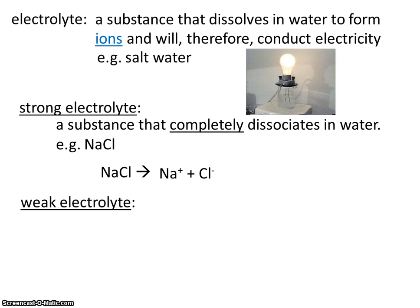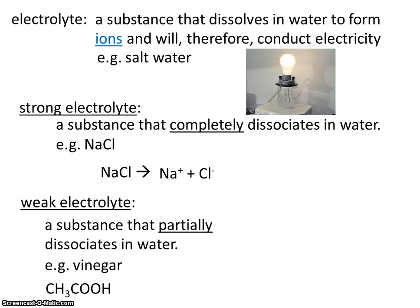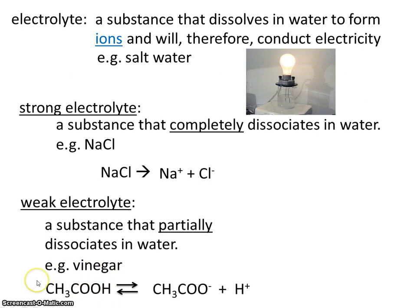Let's contrast that with a weak electrolyte. A weak electrolyte is a substance that partially dissociates in water. So a strong electrolyte completely breaks apart, while a weak electrolyte partially breaks apart. A classic example is vinegar, or acetic acid, written as CH₃COOH. When vinegar is placed in water, some of it breaks apart to form ions, while some of it still stays as the original molecule. So what we have in the solution is some reactant and some product — the reactant does not conduct electricity; it's only the ions that conduct electricity.